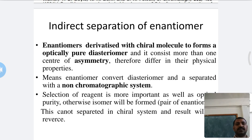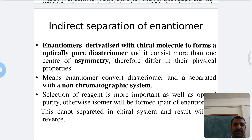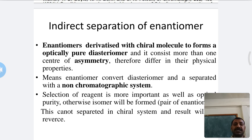The last method is indirect separation of enantiomers. In direct separation, we use chiral mobile phase, chiral stationary phase, or chiral liquid stationary phase, where enantiomers convert to diastereomers and are separated directly based on different velocities and retention times in the column. In indirect separation, enantiomers are first converted to diastereomers and then separated.